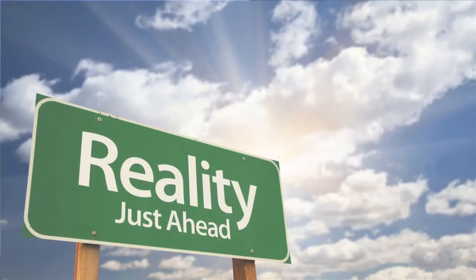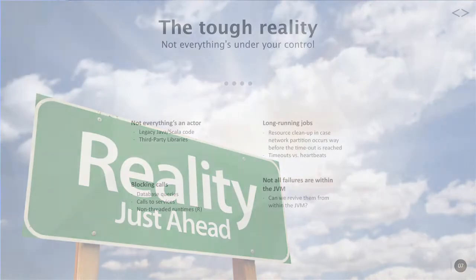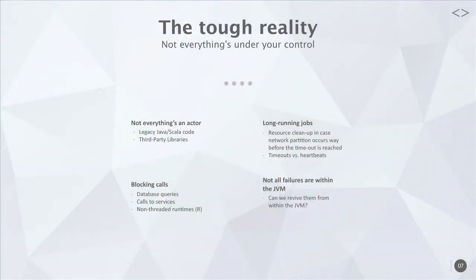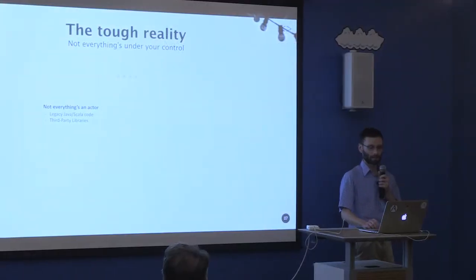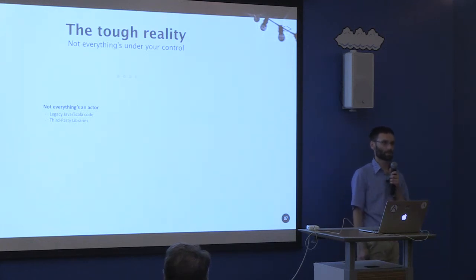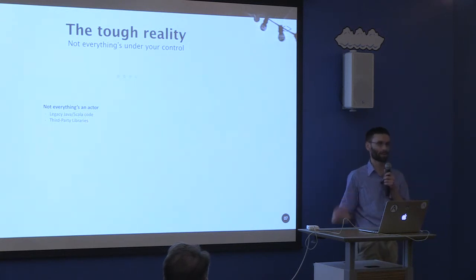If everything were written in Akka, the world would have been phenomenal. But unfortunately not everything is written in Akka, so we have to deal with it. Not everything is an actor — if you're writing your own code you can say everything's going to be an actor, but in reality you have third-party libraries and you're not going to rewrite them. And sometimes, even if you have a lot of legacy code you may wish to refactor it, but it's still really hard.